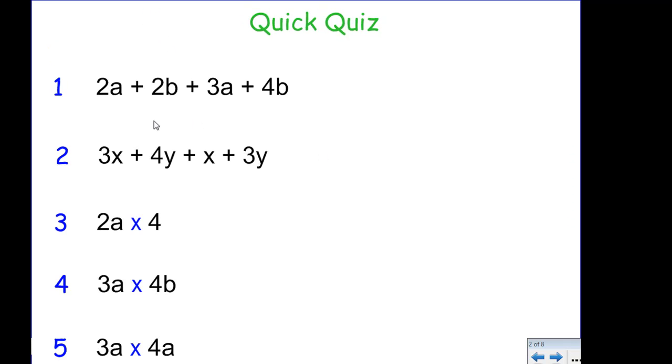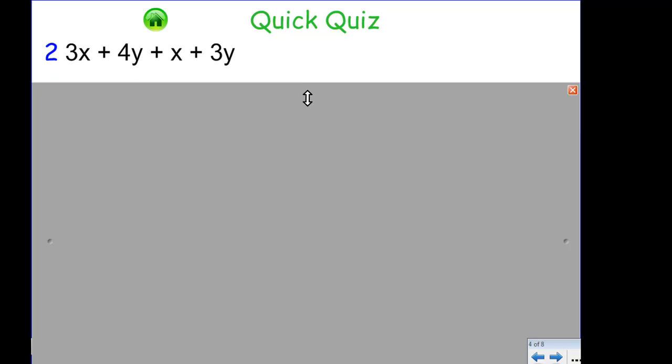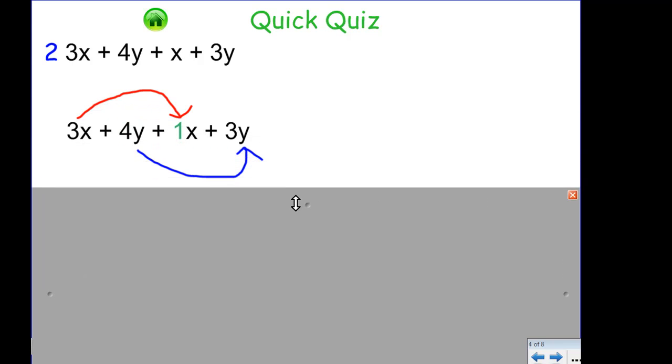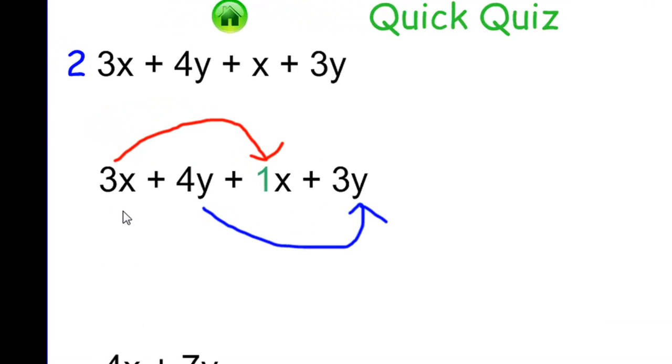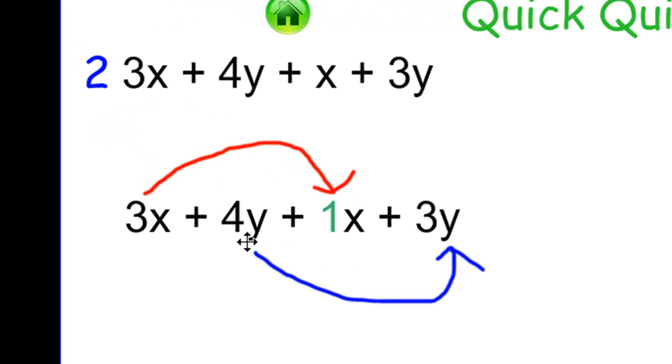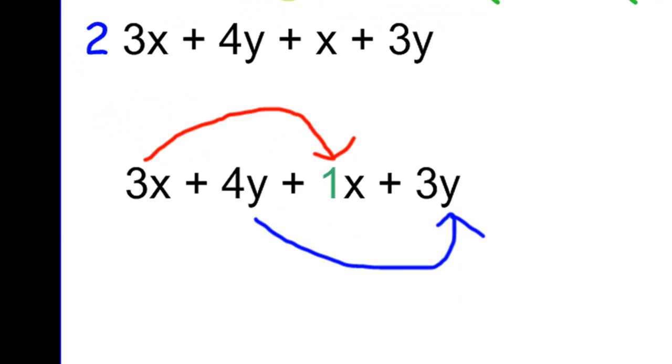Back there we might go back to the home page and a kid might say, hang on, don't get number 2. So we'll go back there. Alright, got a bit of working out for this one. Okay, so 3x plus 1x is 4x and 4y plus 3y is 7y.